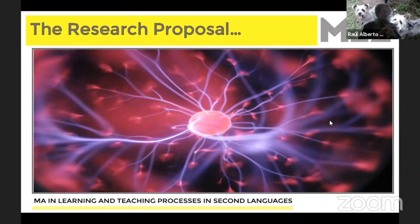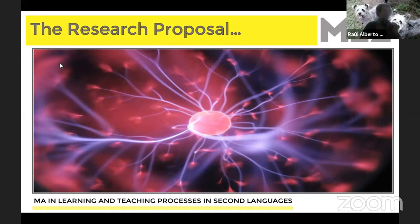Don't make the technical mistake of summarizing and summarizing repeatedly. You may include short summaries as you talk about groups, but you don't have to go and summarize article one, article two, article three — that is not a literature review.